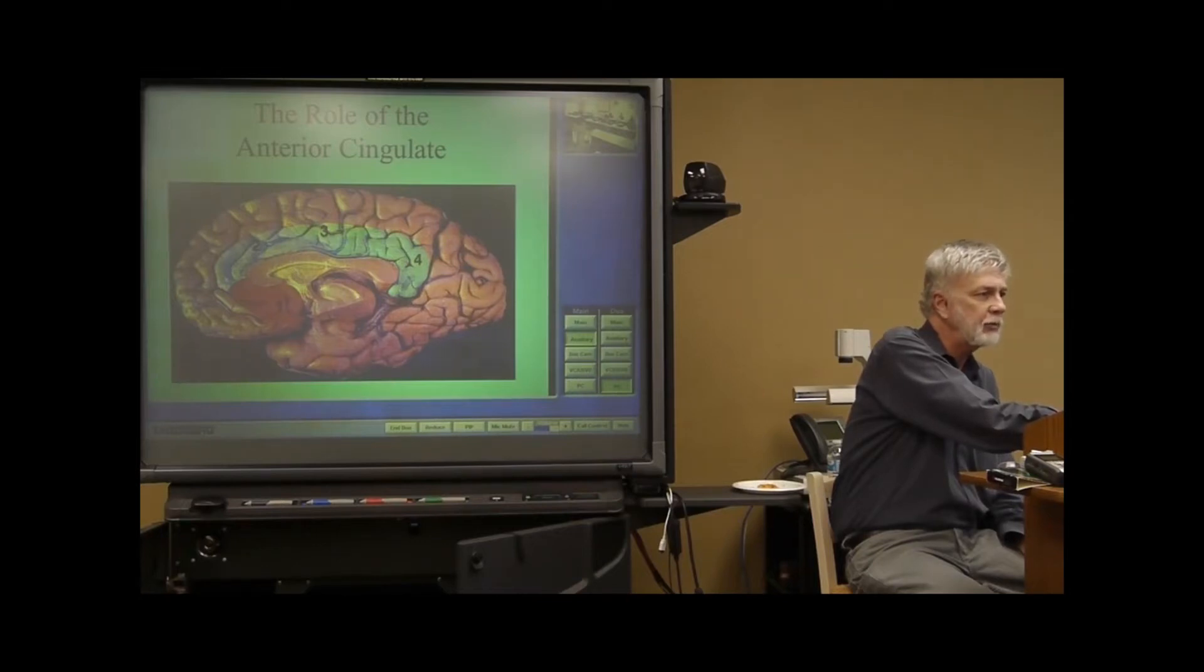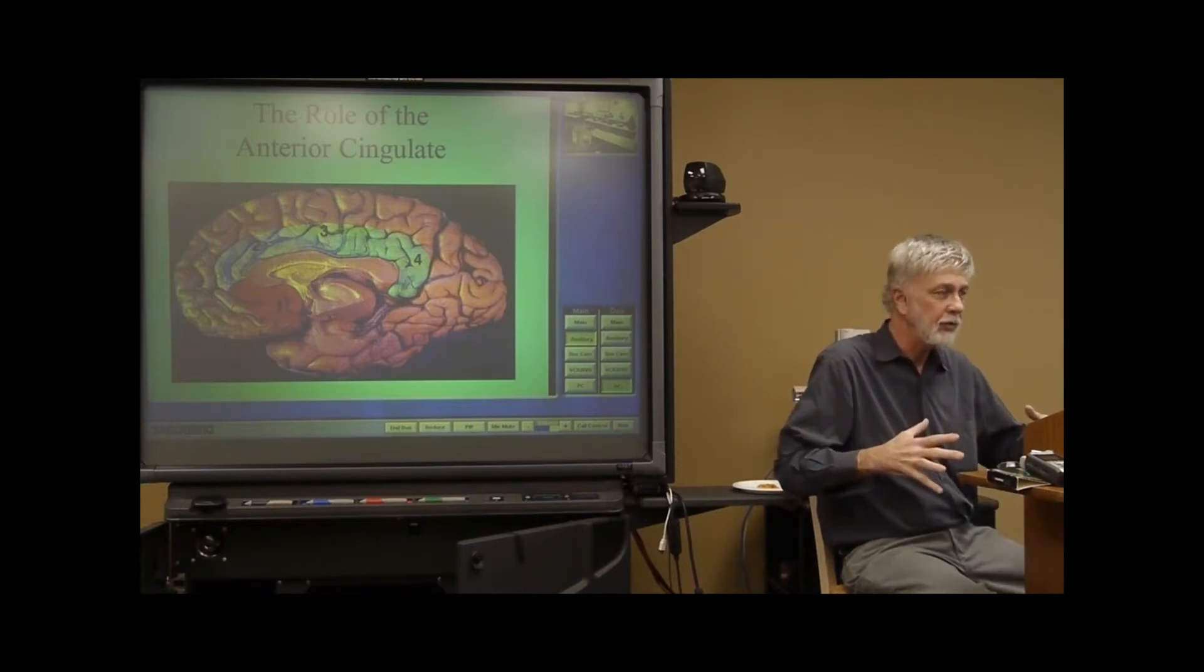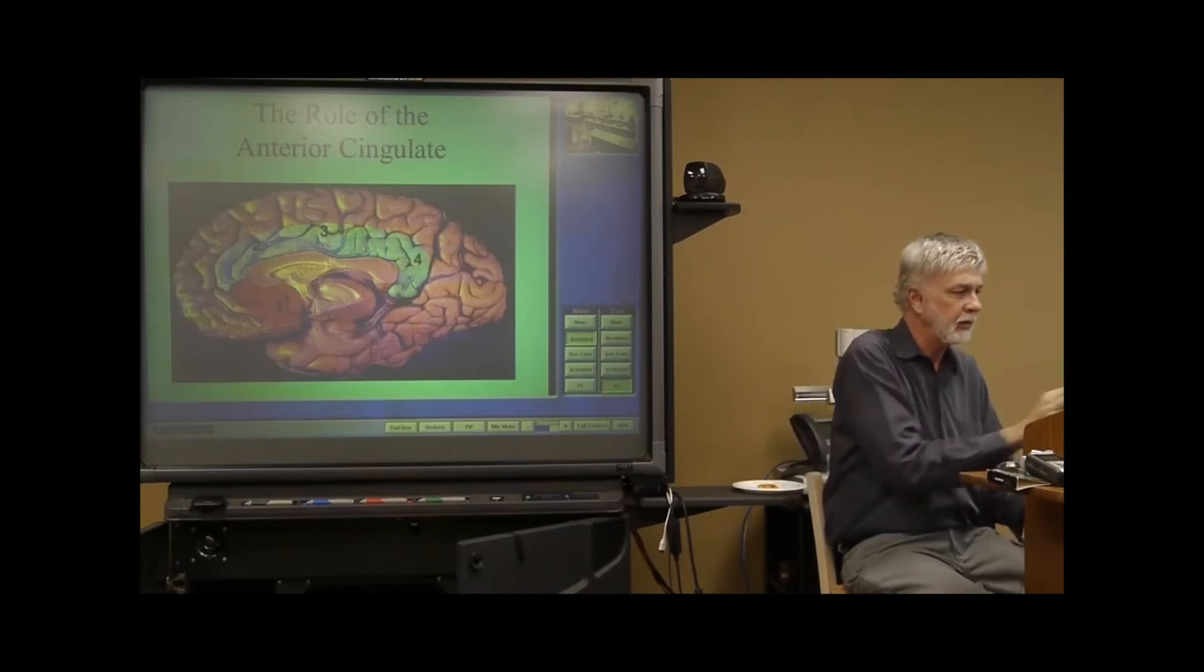And this is actually part of the frontal lobes. And frontal lobes do a lot of different things that we've certainly talked about, but one thing they do is that a lot of the circuits are inhibitory circuits that control emotions and impulses, and certainly the anterior cingulate does that.